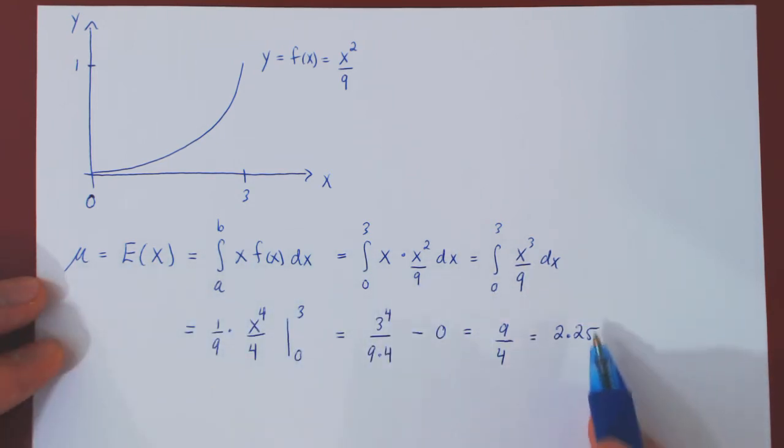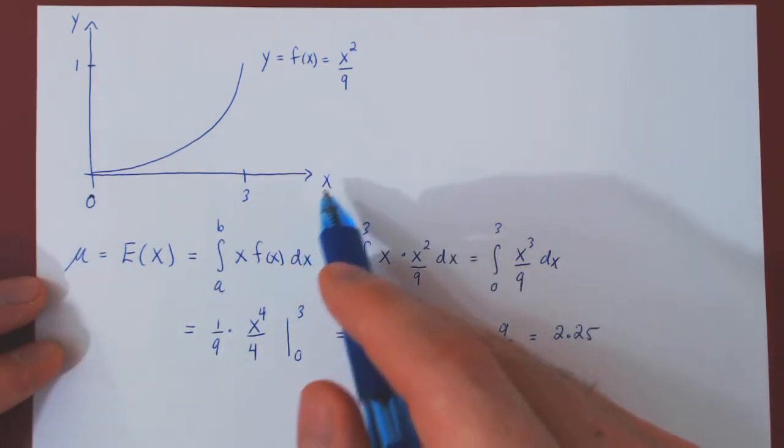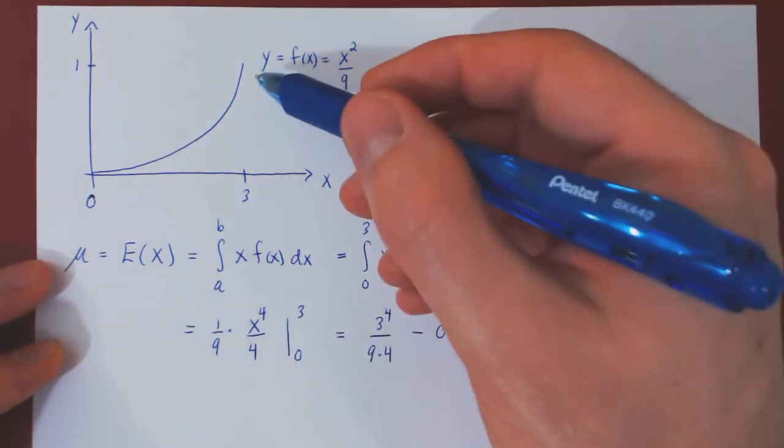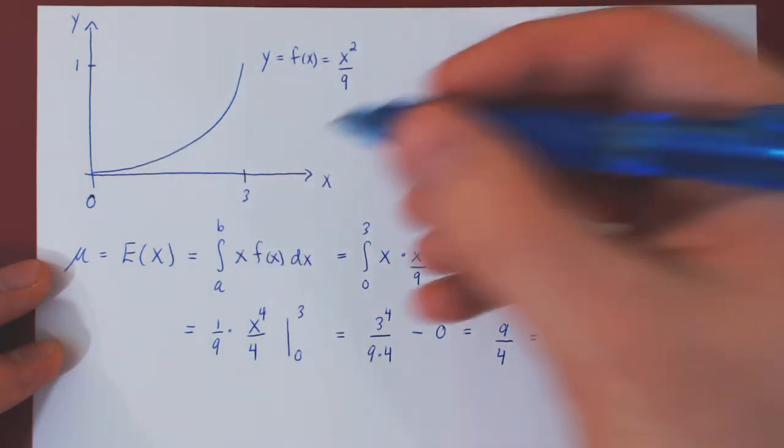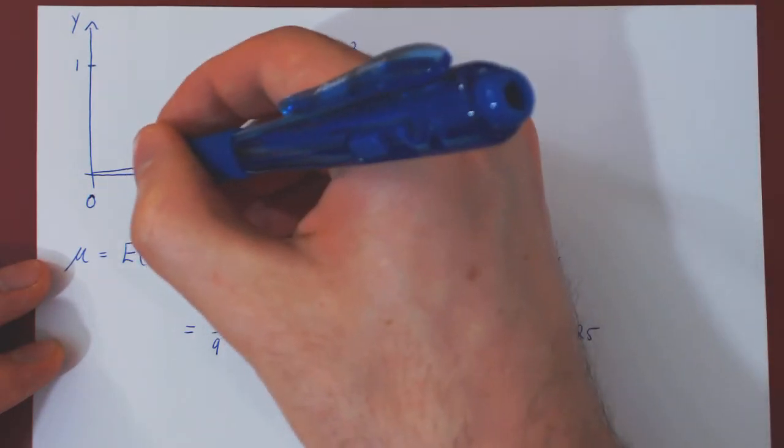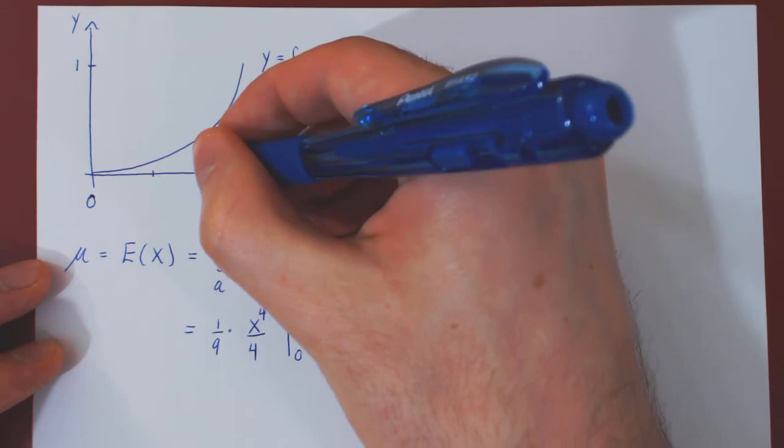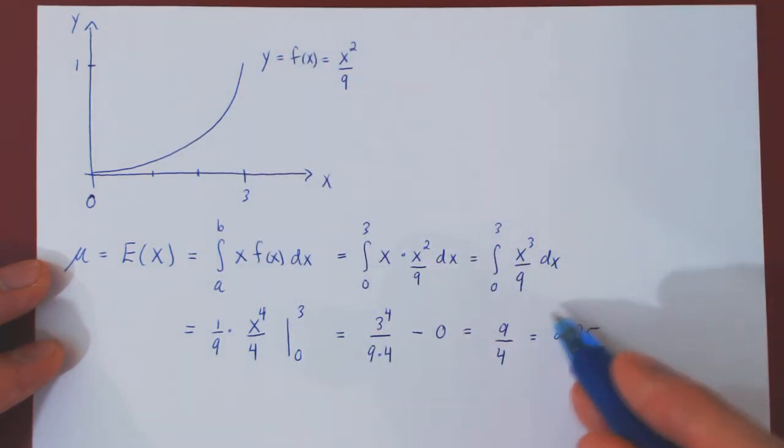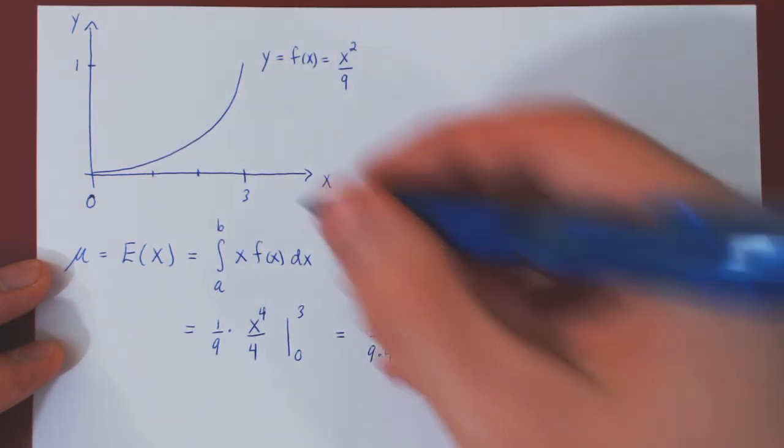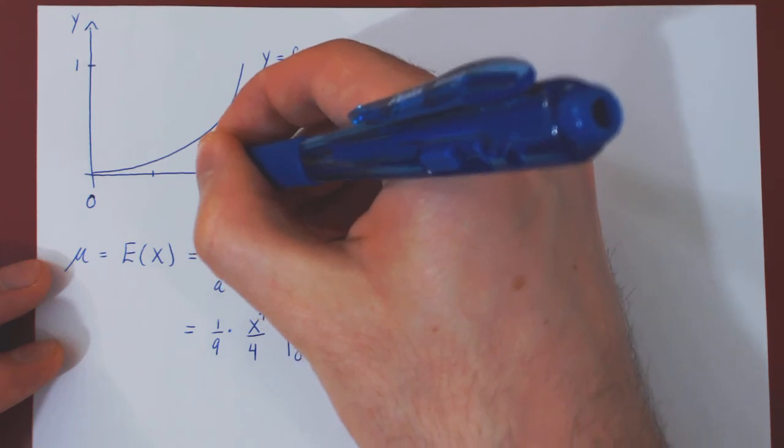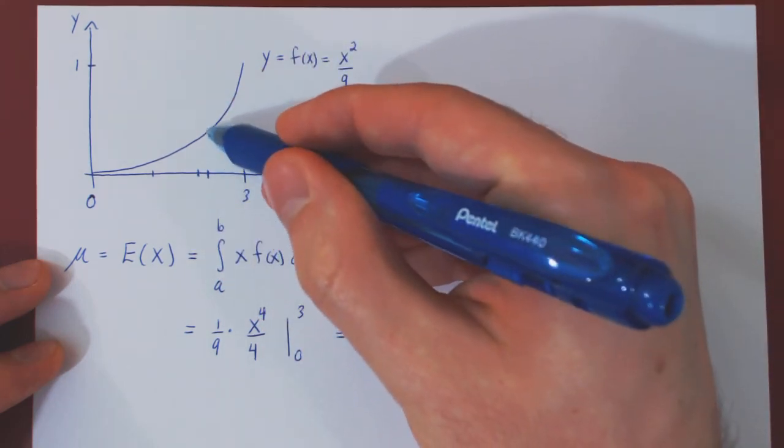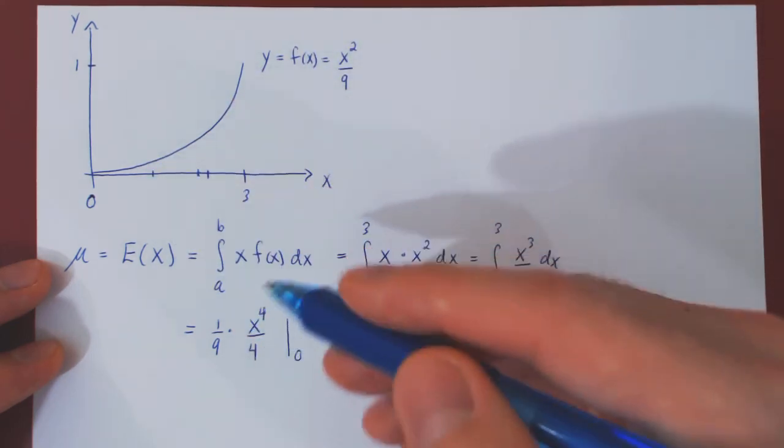We now have the average value of the variable x. If you look at the picture, this is about 1, about 2, and the average value is about 2.25. It looks about right—it looks about the center of the distribution.